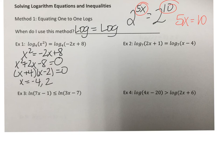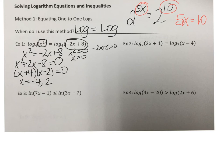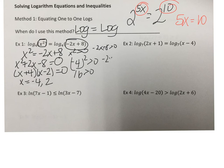Because a log has a domain restriction, what's inside the log has to be greater than 0. So we're going to plug in our answers and see which ones work. For x = −4: (−4)² = 16, which is greater than 0. And negative 2 times negative 4 plus 8 is 8 plus 8, which is also greater than 0. So log base 4 of 16 equals log base 4 of 16 — that one worked.